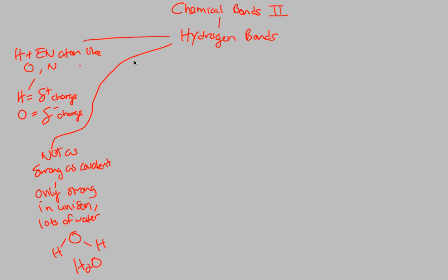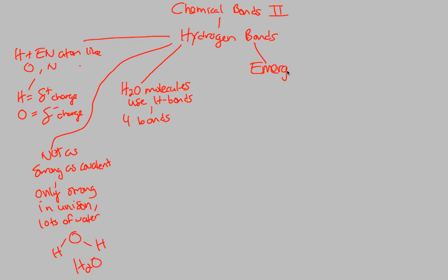What we also notice is that hydrogen bonds involve H2O molecules, and more specifically, these H2O molecules using H-bonds usually try to achieve four bonds — each H2O molecule tries to find three other H2O molecules to form a four-bond hydrogen connection. This gives us a much stronger overall force, acting in unison. This background gives us the ability to look at what are known as the emergent H2O properties.